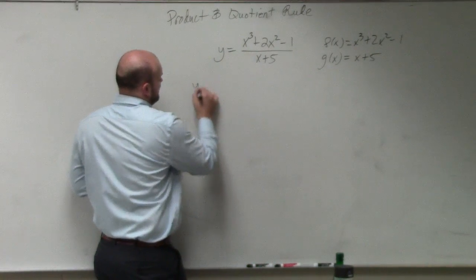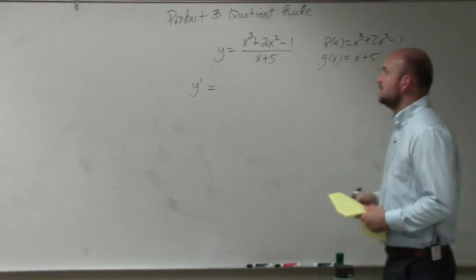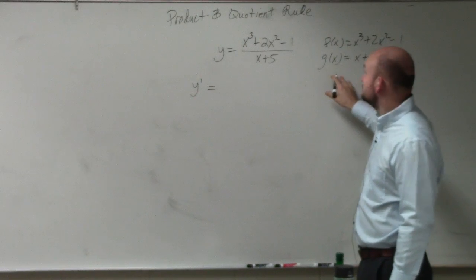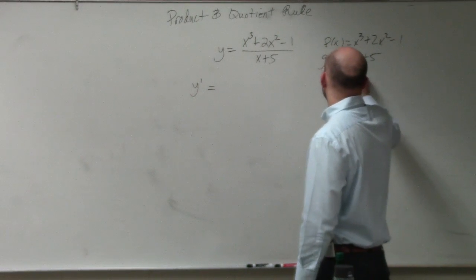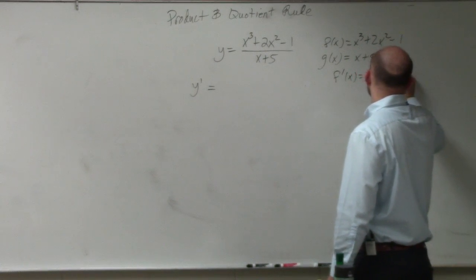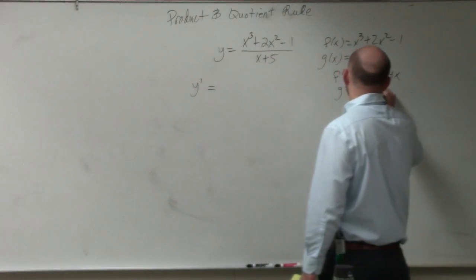So therefore, by finding y prime, I'm not going to rewrite the quotient rule because it's so involved. Oh, I'm sorry, let's go ahead and find the derivative. So derivative of f of x is equal to 3x squared plus 4x, and the derivative of g of x is 1.